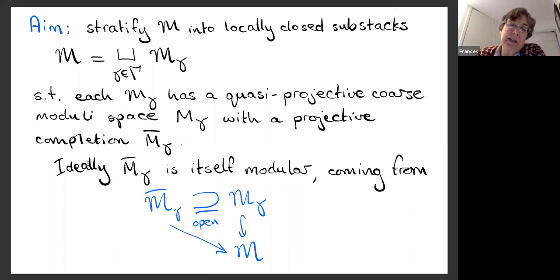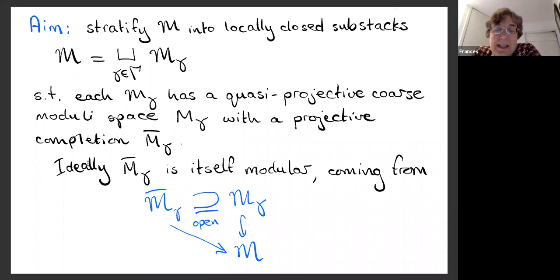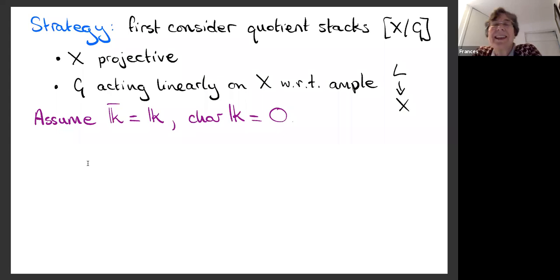We'd like to have a projective completion. If M_gamma is the quasi-projective coarse moduli space, then we'd like a projective completion which ideally should itself be modular — coming from some modular stack curly-M_gamma-bar, which contains M_gamma as an open sub-stack, and at least admits a morphism from M_gamma-bar. That's the sort of picture we'd like to have to understand the moduli stack and divide it into pieces with nice moduli spaces.